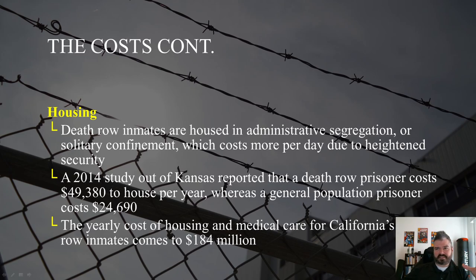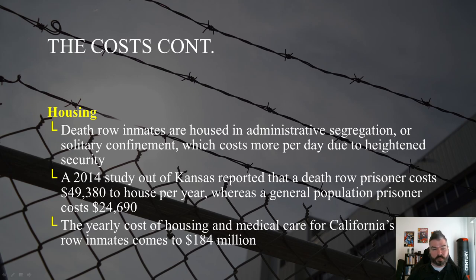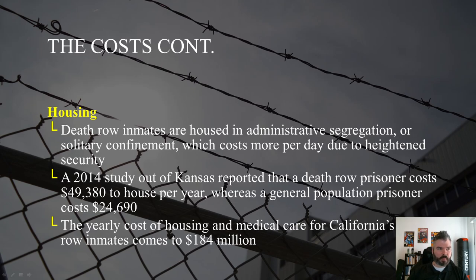All six of these reasons — attorney fees, expert costs, unpredictability of trials, mitigation investigation, jury selection, and housing — help explain why the death penalty is so expensive. So, with that discussed, do you agree with the death penalty? I'm not trying to guide you one way or the other. This is an exposure to some of the arguments for and against the death penalty. Should a society have the death penalty? That is a question that, as voters, you and I will have to answer — and we should have an open discussion about it with elected officials, candidates, neighbors, family, and friends.